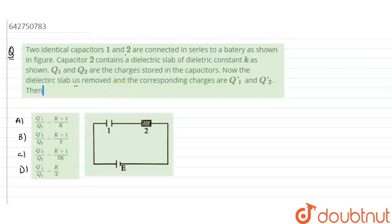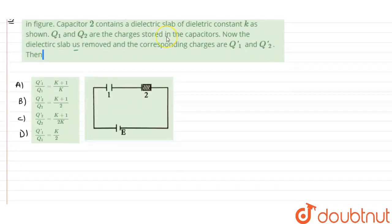Capacitor 2 contains a dielectric slab of dielectric constant k as shown. Q1 and Q2 are the charges stored in the capacitors. Now the dielectric slab is removed and corresponding charges are Q1 dash and Q2 dash. So we have two cases: when slab is there and then slab is removed.